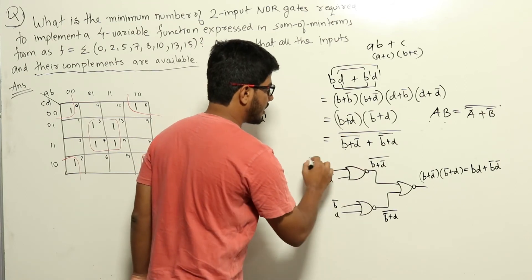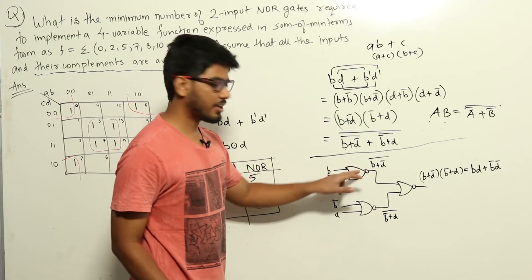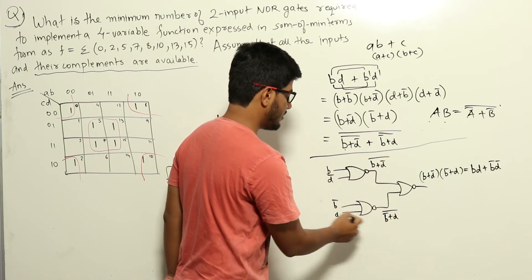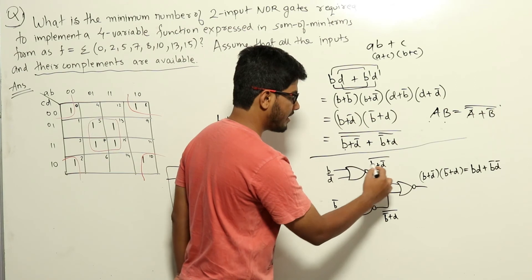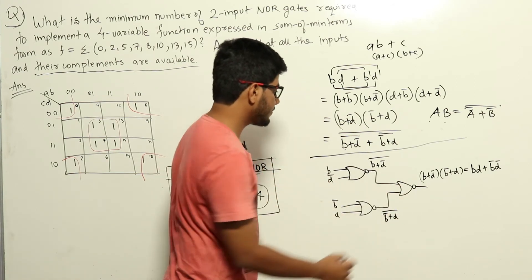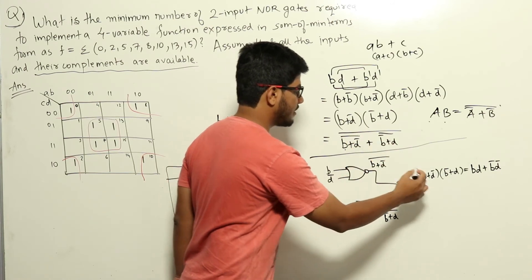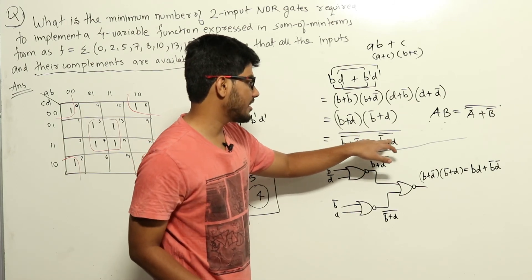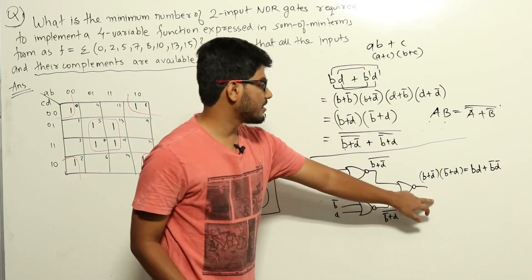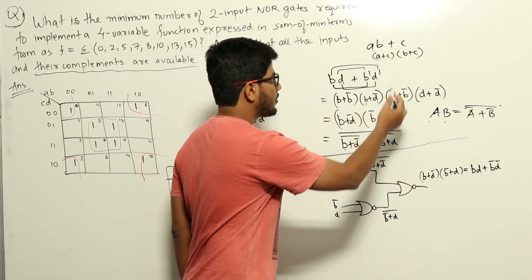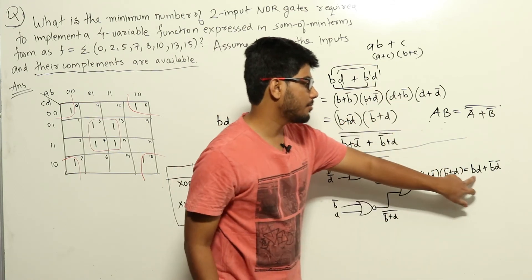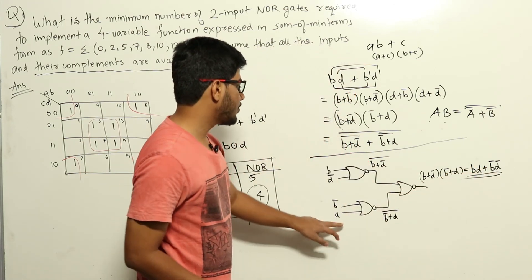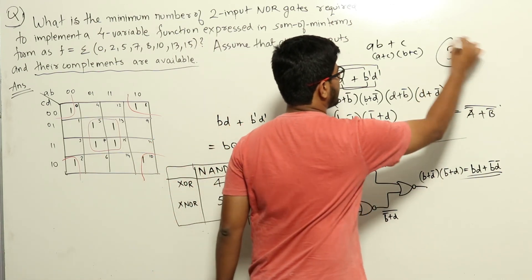As shown in the diagram, B and D' are fed into one NOR gate giving (B + D') complement; B' and D are fed into another NOR gate giving (B' + D) complement. These two outputs feed into a third NOR gate, producing [(B + D') complement + (B' + D) complement] complement, which equals BD + B'D'. So the function can be implemented using just three NOR gates, and the answer is 3.